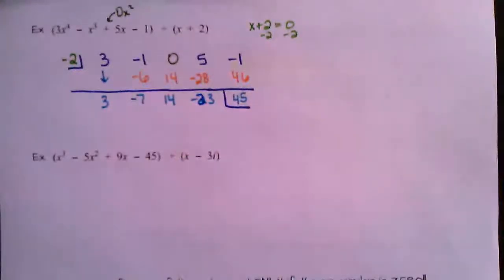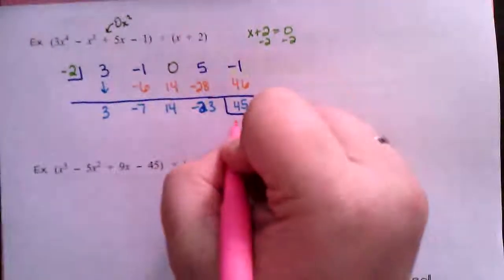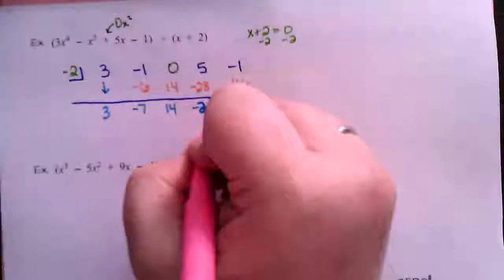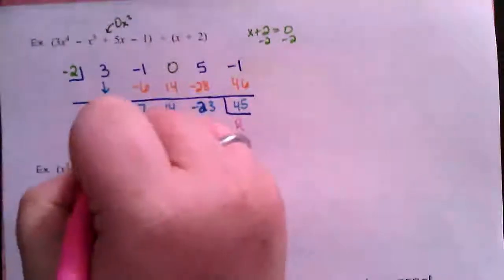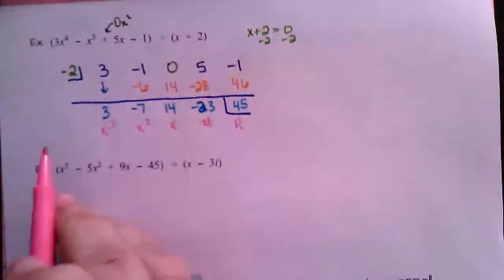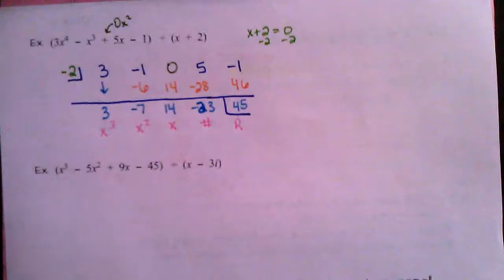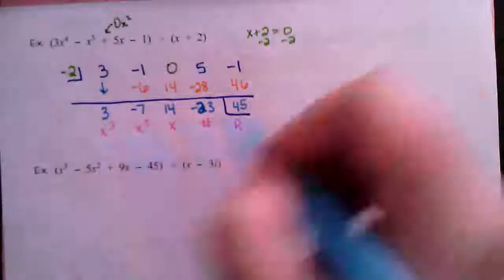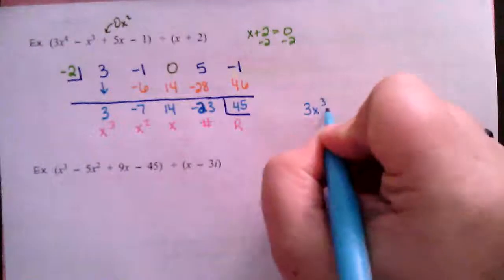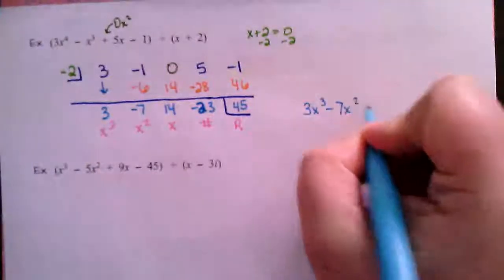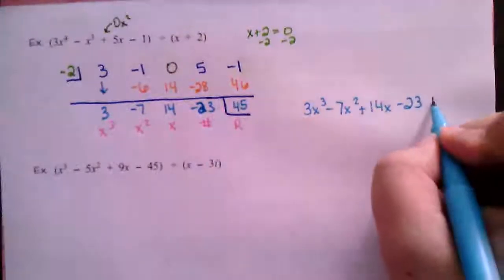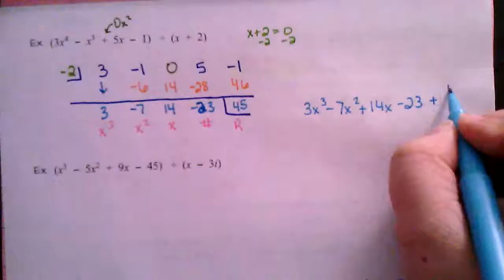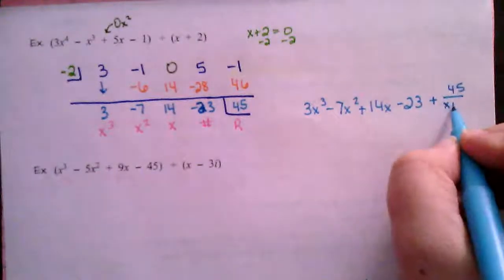This seems a lot quicker than long division. Reading the result: the remainder is 45, then the number is negative 23, then x, x squared, x cubed. So the answer is 3x cubed minus 7x squared plus 14x minus 23, plus 45 over (x plus 2).